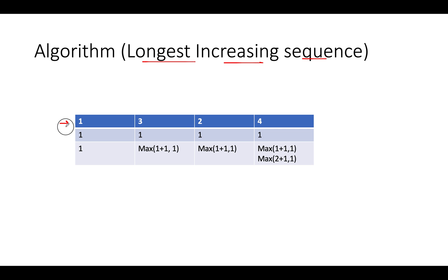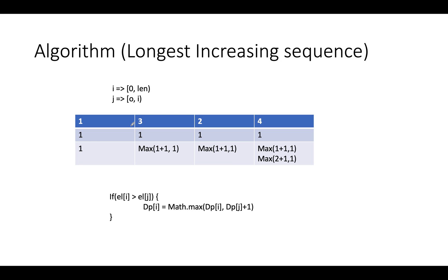In this problem we are given an array and we need to count the length of the longest increasing subsequence. It's one of the typical problems of dynamic programming. For example, we have 1, 3, 2, and 4 — what is the length of the longest increasing subsequence? Note that this is a subsequence, not a substring. The longest increasing subsequence here would be 1, 3, and 4, and we will solve it using dynamic programming.